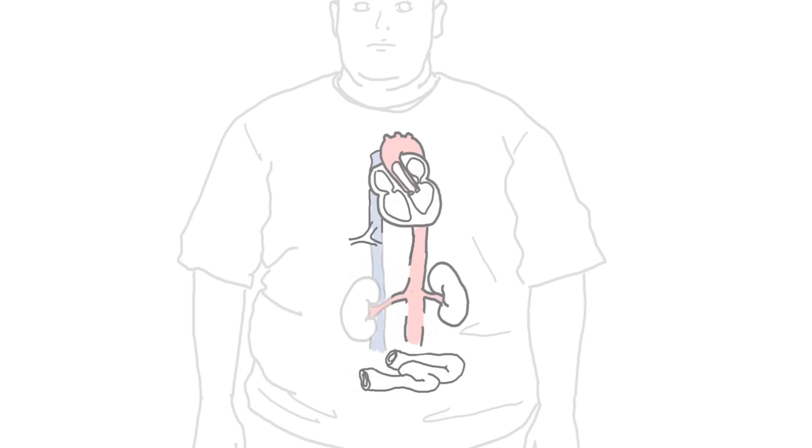The heart also pumps blood to our splanchnic circulation, which is a name given to describe blood being delivered to our gastrointestinal organs such as the stomach and intestines. Therefore, these arteries are the celiac arteries, superior and inferior mesenteric arteries.